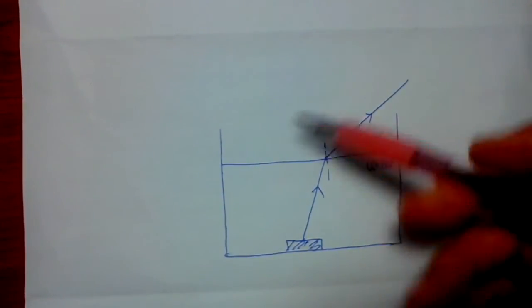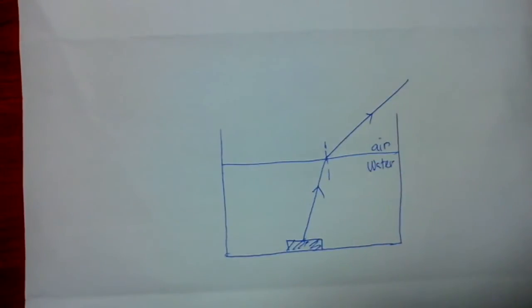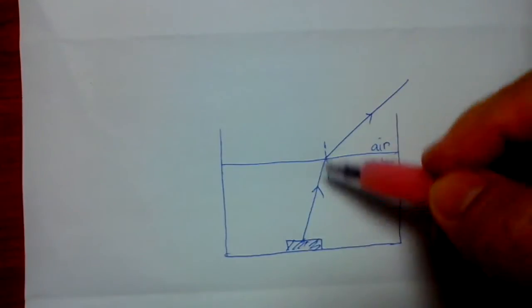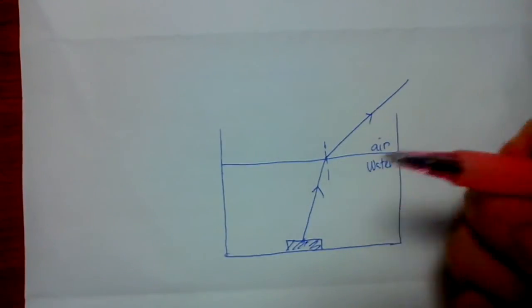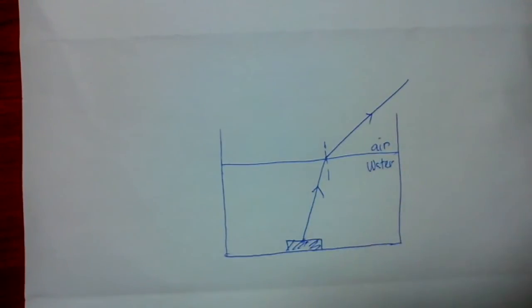Right, so you have the light ray bend away from the normal in the air, then how do you know from this ray that you can construct the image of the coin in the water.